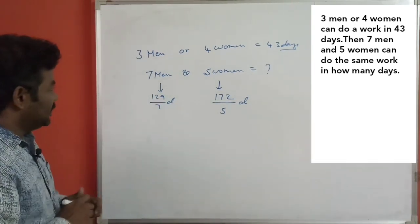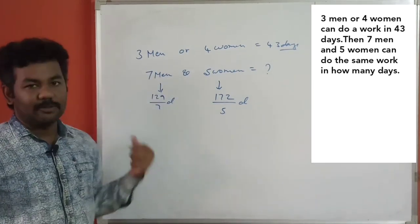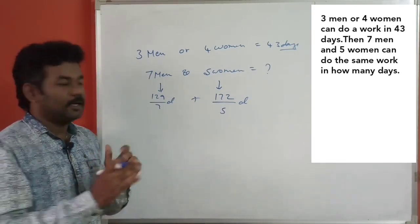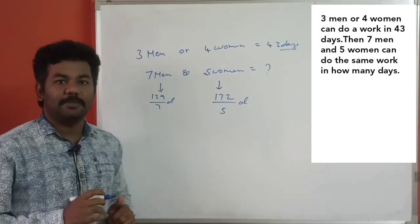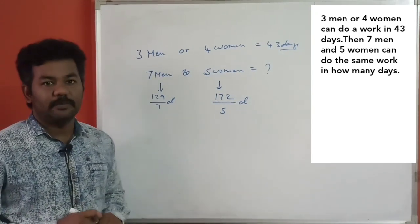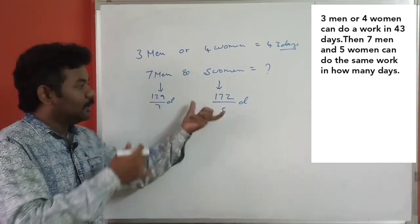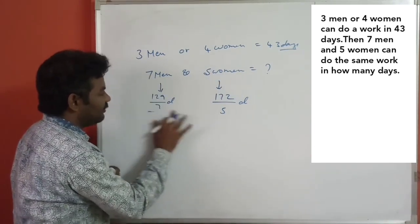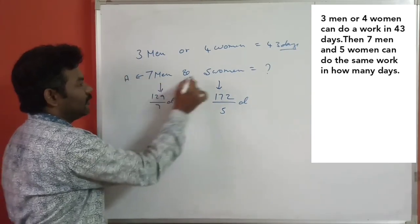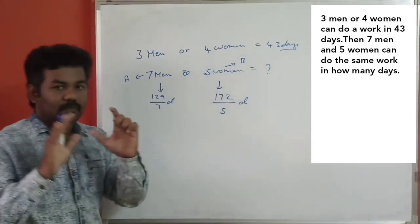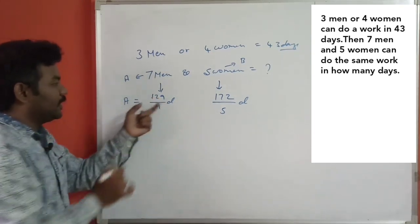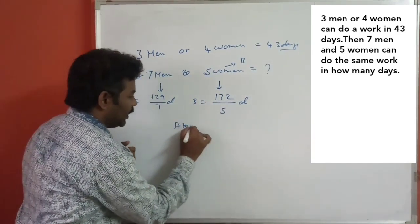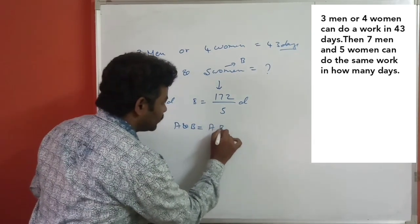Now we have to solve the case using the direct approach. Men increase and days decrease — clear? Seven men is A, and five women is B. A can do the work in 129 divided by 7 days. B can do the same work in 172 divided by 5 days. For A and B together, there is a formula: AB divided by A plus B.